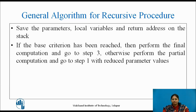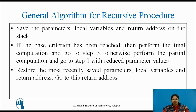If the base criterion has not been reached, we need to perform the partial computation and go to step 1, repeating the process again with reduced parameter values. If the base criterion has been reached, we need to restore the most recently saved parameters, local variables, and return address, and then go to that return address.